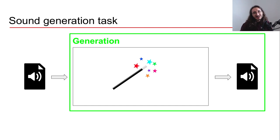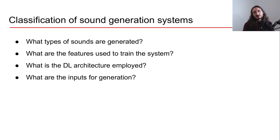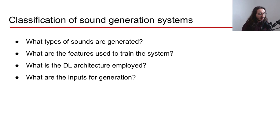How can we classify different sound generation systems? We don't have an official taxonomy, but here are some questions useful for understanding different models. First: what types of sounds are generated? Second: what features or sound representations are used to train the system? Third: what deep learning architecture is employed? And finally: what inputs do we give the model to generate sound?